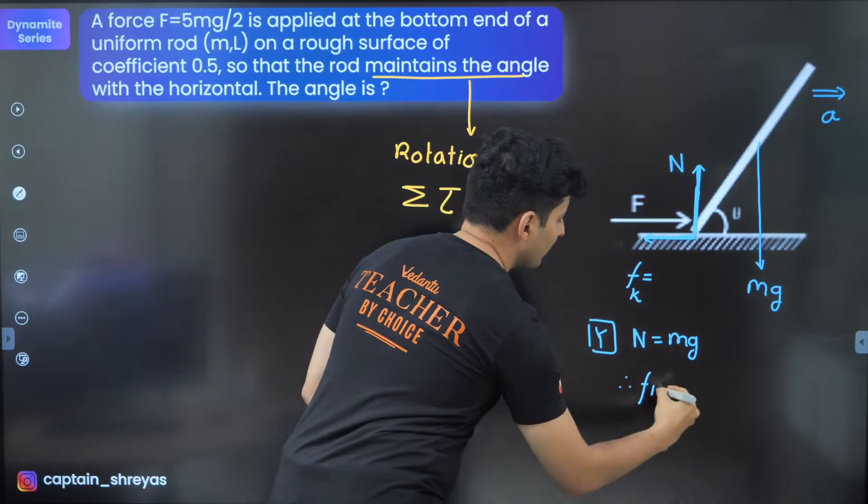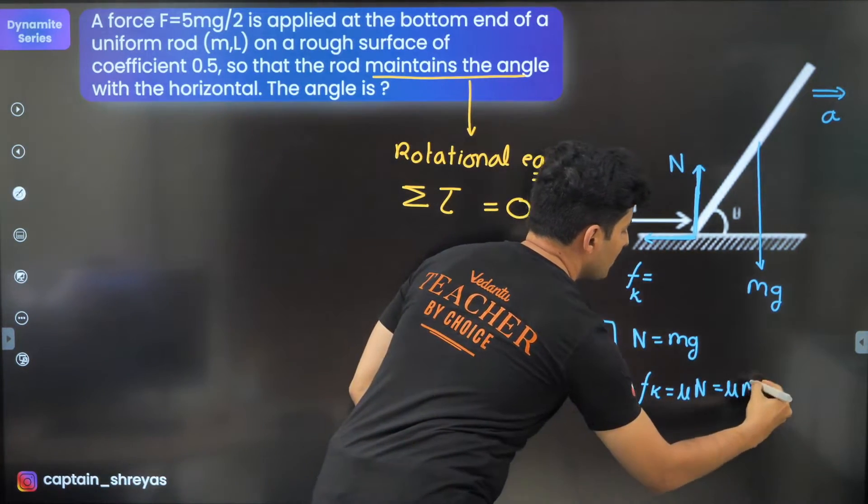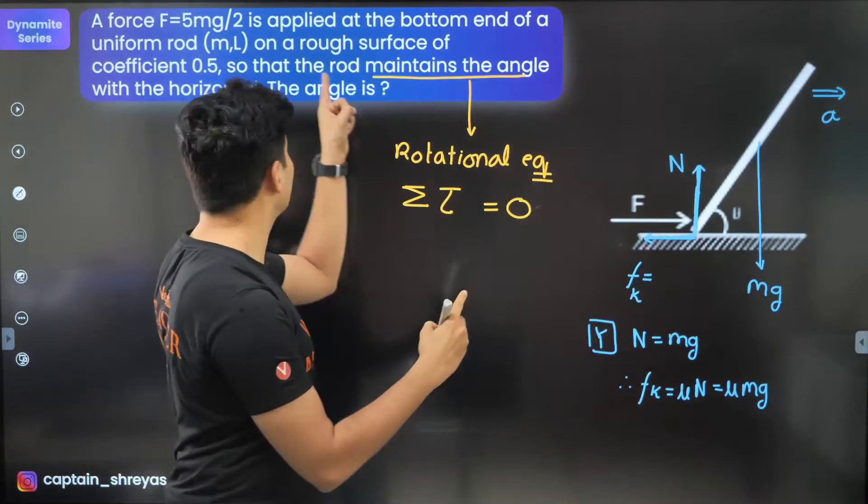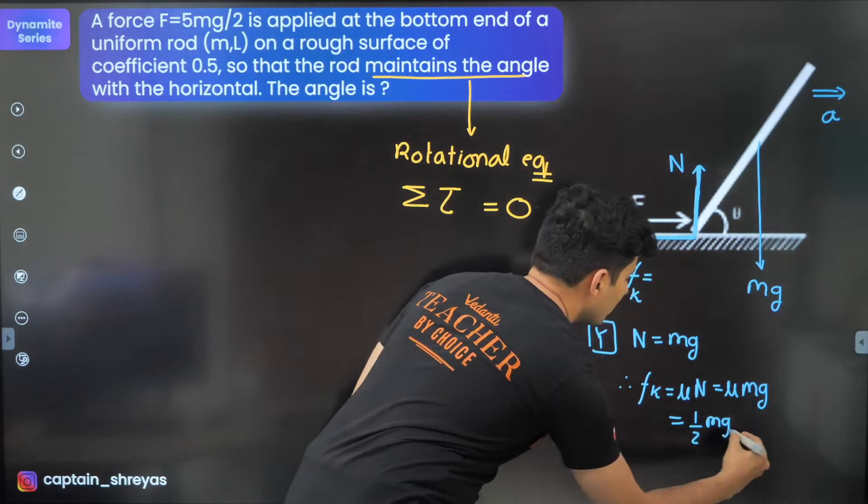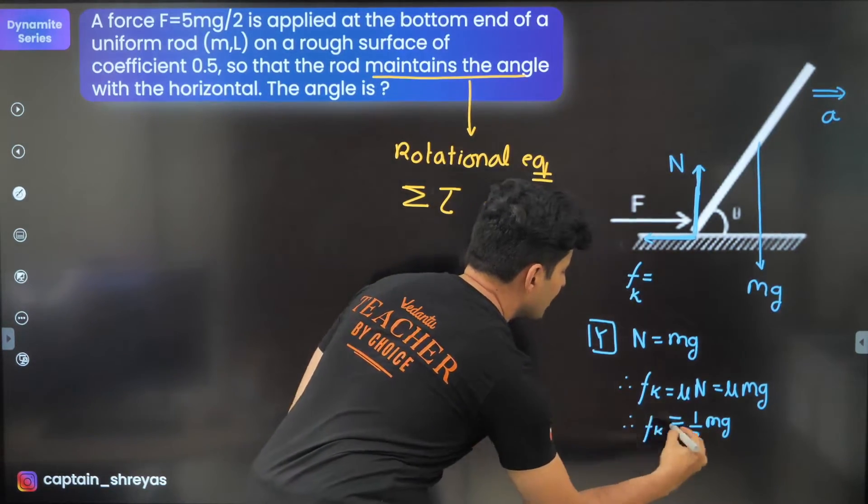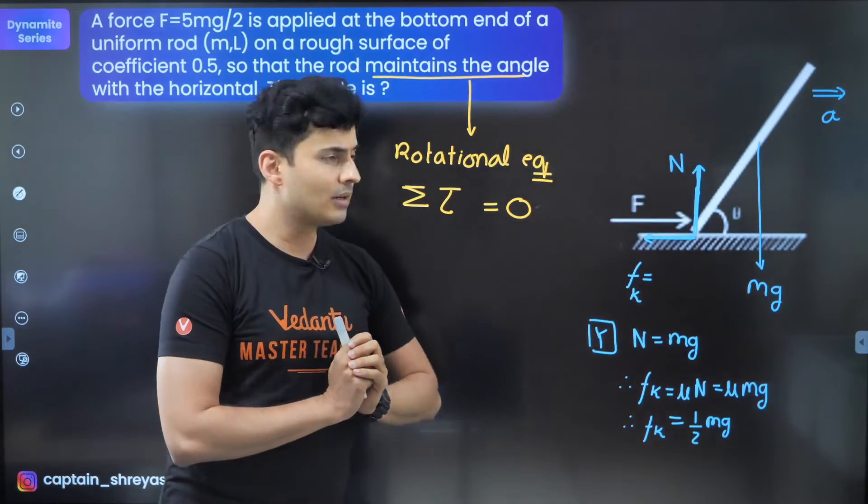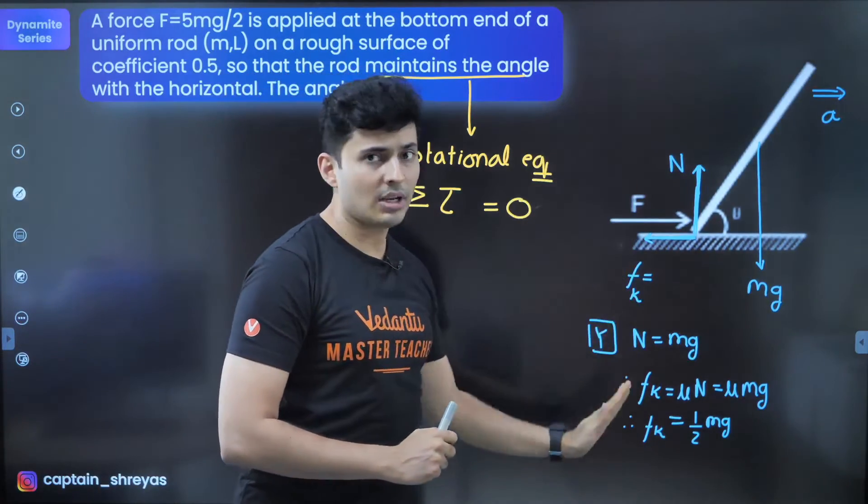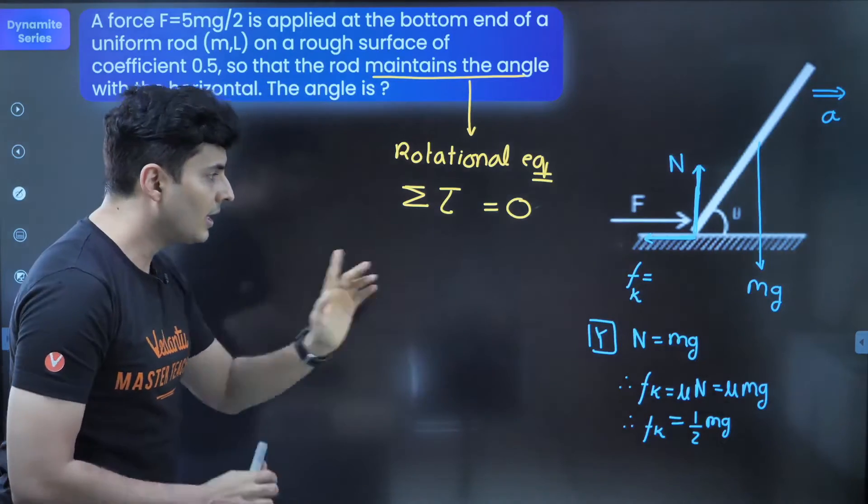Therefore, the kinetic friction, which is mu into N, will become mu times Mg. But mu value is given to be 0.5, so hence it's just going to be half Mg. That's the value of the kinetic friction we just figured out from the value of the normal. Because there is no acceleration in the y direction, normal and Mg should balance in the y axis.